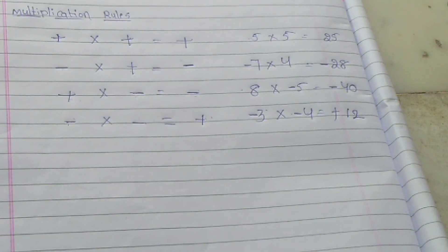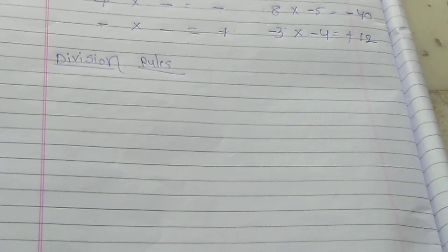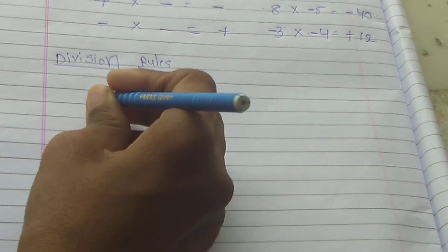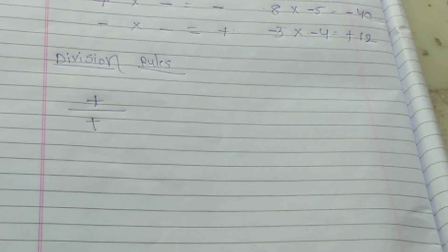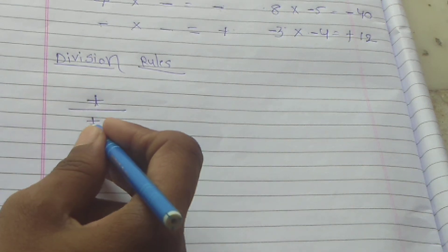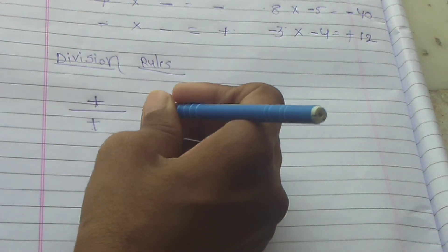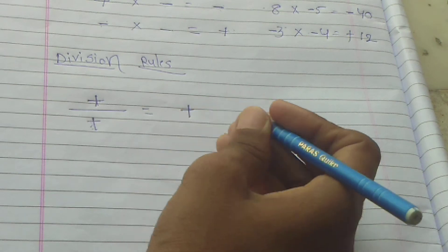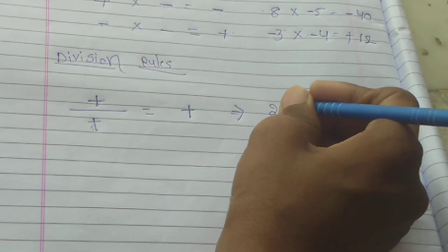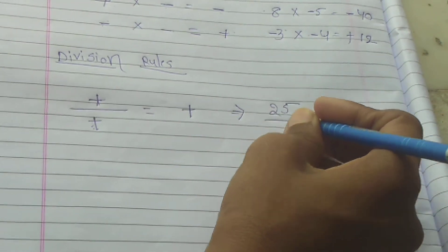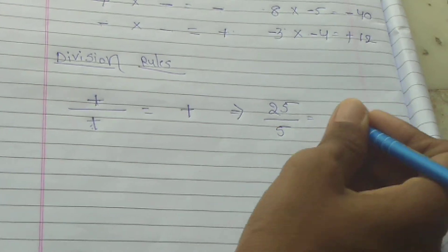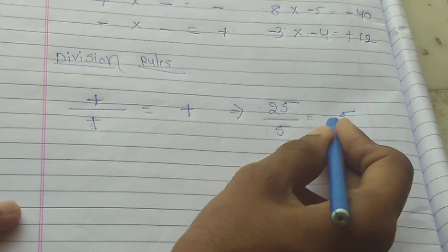Now we've seen multiplication rules for positive and negative. Let's look at division rules. Plus divided by plus: if the numerator is plus and denominator is plus, the answer is plus. For example, 25 divided by 5 — both positive — answer is 5, which is plus.